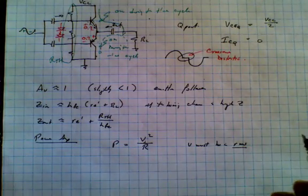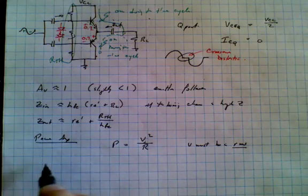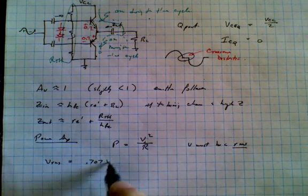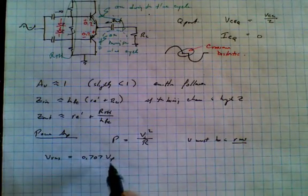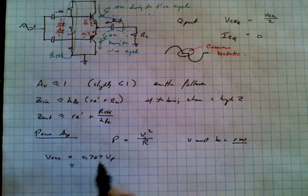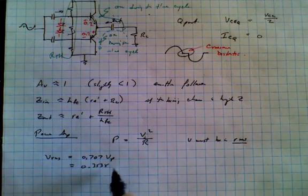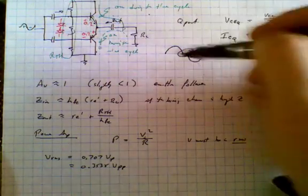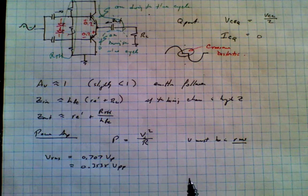So likewise in the speaker system, we typically talk about continuous power, although we can specify a thing called peak power as well. Now remember that voltage RMS is equal to 0.707 times the voltage peak. And if we were looking at peak-to-peak voltage, it would be half of this, so it would be also equal to 0.3535 volts peak-to-peak. Peak-to-peak is nice to specify here because on an oscilloscope, that's what we'd measure.